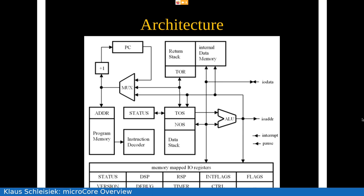A version register tells you which VHDL version you are running. A debug register allows you to run the umbilical link between the host and the target computer. A timer gives you time units — I usually run it at 250 microseconds. And a controller register that you can use to set single bits somewhere.